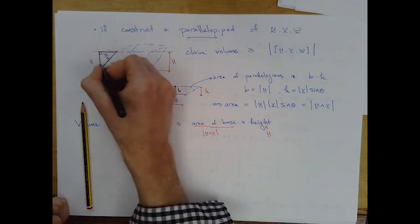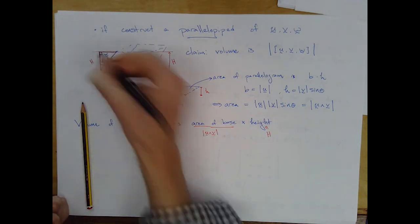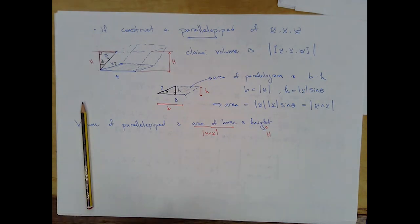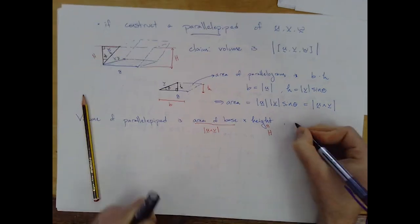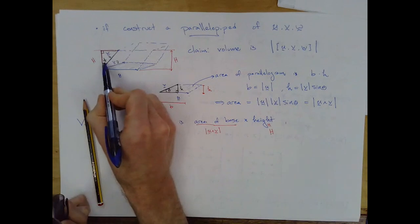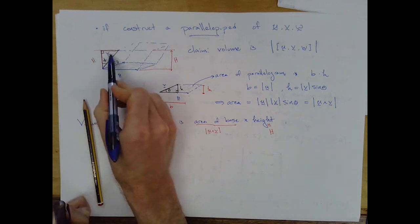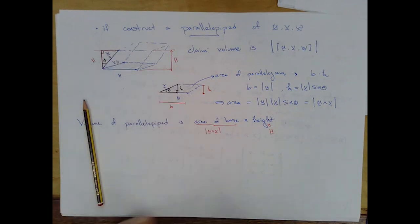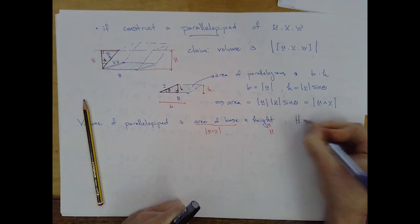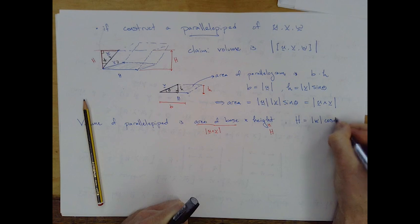So if I define this angle here as, say, phi, then I'm going to conclude that h, in this case, if I take the cosine of phi, I get h over the hypotenuse, which is magnitude w, so h is magnitude w times the cosine of phi.